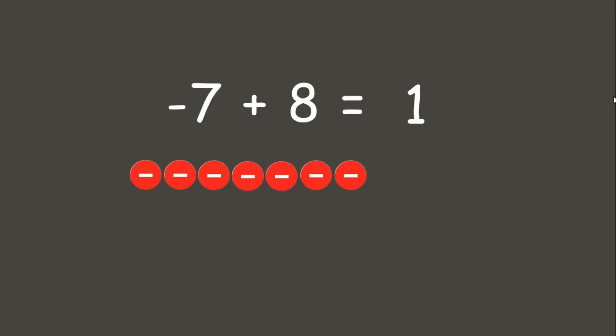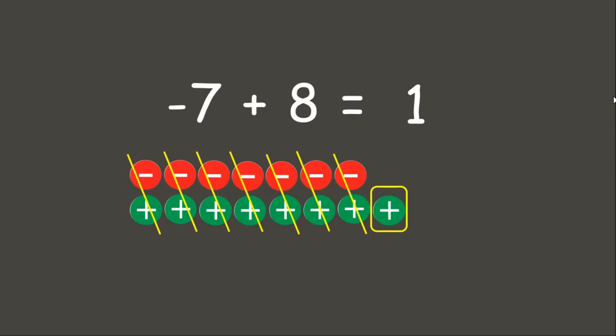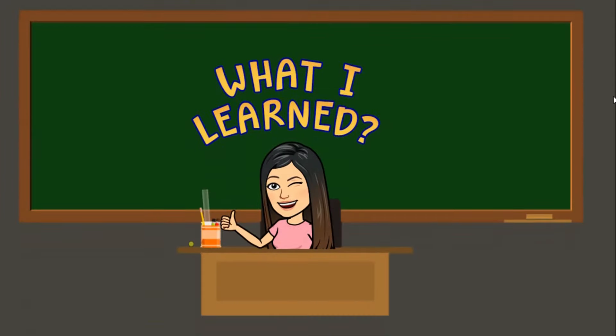Let us check using counters. We have 7 negatives plus 8 positives. We cancel out each pair of 1 negative and 1 positive. We have 1 positive left, therefore our answer is correct. Wonderful job, students! Now here are the things that you learned today.